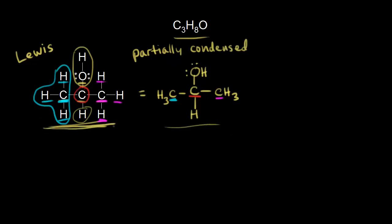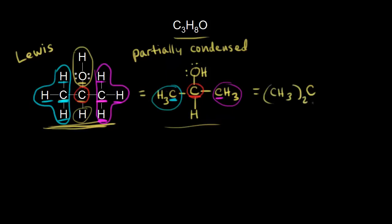It's the same molecule, just a different way to represent it. We could keep going to a fully condensed structure. Focus on the carbon in red — that carbon is bonded to two CH3 groups, one on the right and one on the left, which we write as (CH3)2. The carbon in red is also bonded to a hydrogen and to an OH. This is the fully condensed version — no bonds are drawn in; you have to infer the bonding from the condensed formula.